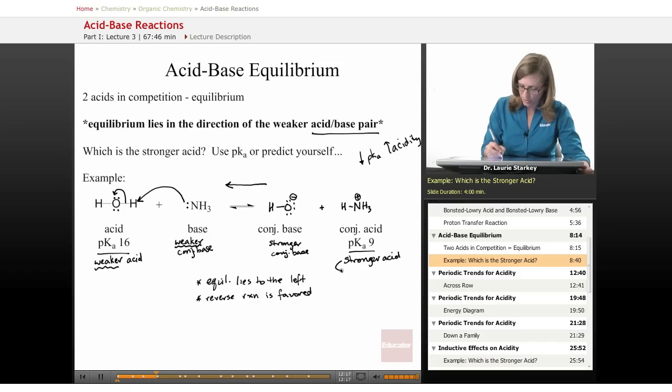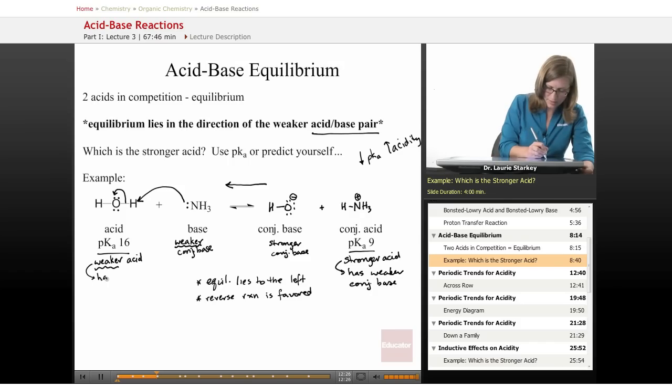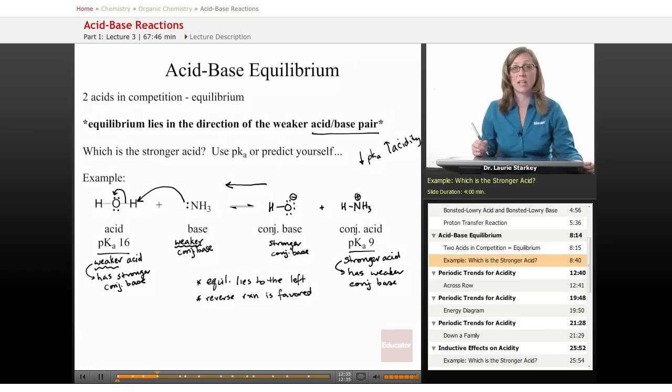We can just mention here the stronger acid has the weaker conjugate base, and the weaker acid has the stronger conjugate base. So you can see how we ended up labeling those two bases. So this is how we can decide the direction of an acid-base equilibrium.